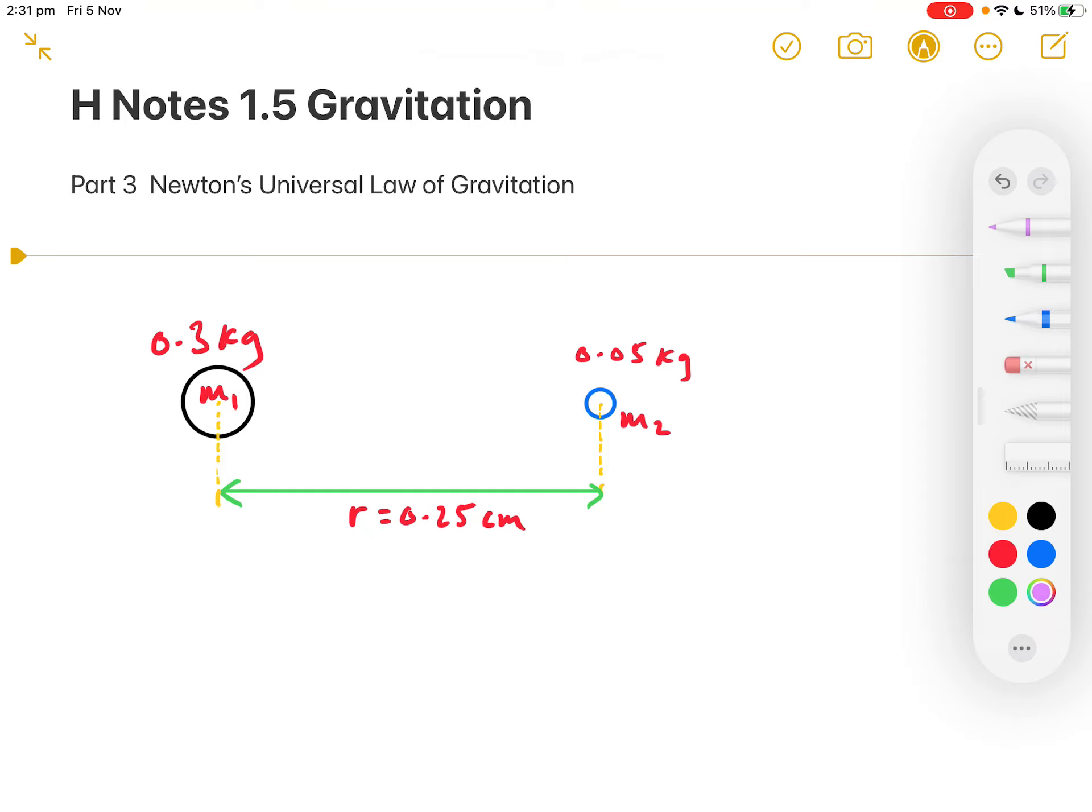Now, let's draw that force in. So, here is the force, we'll call it F, that M1 exerts on M2, pulling it towards itself.